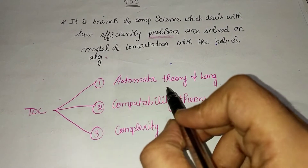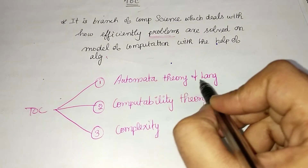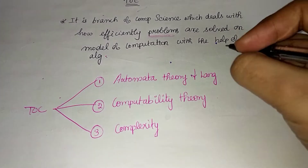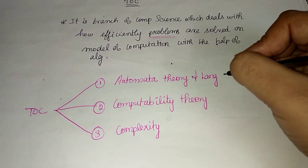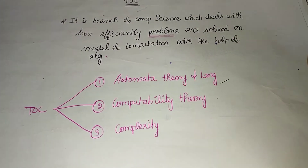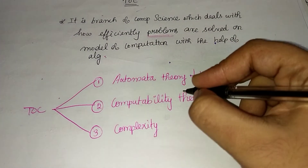ToC is the first type — Automata Theory and Language. There are three types of major branches in ToC.